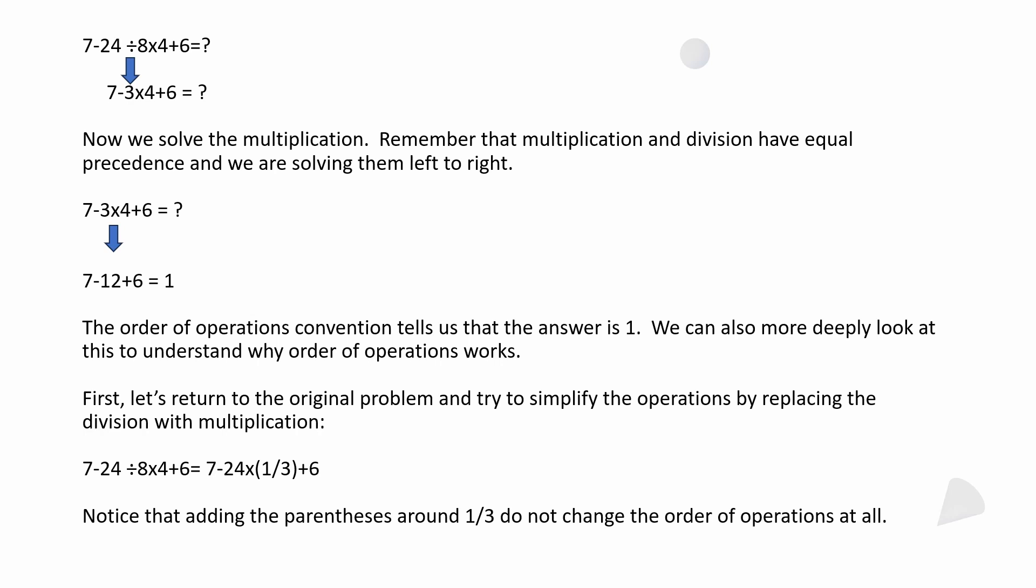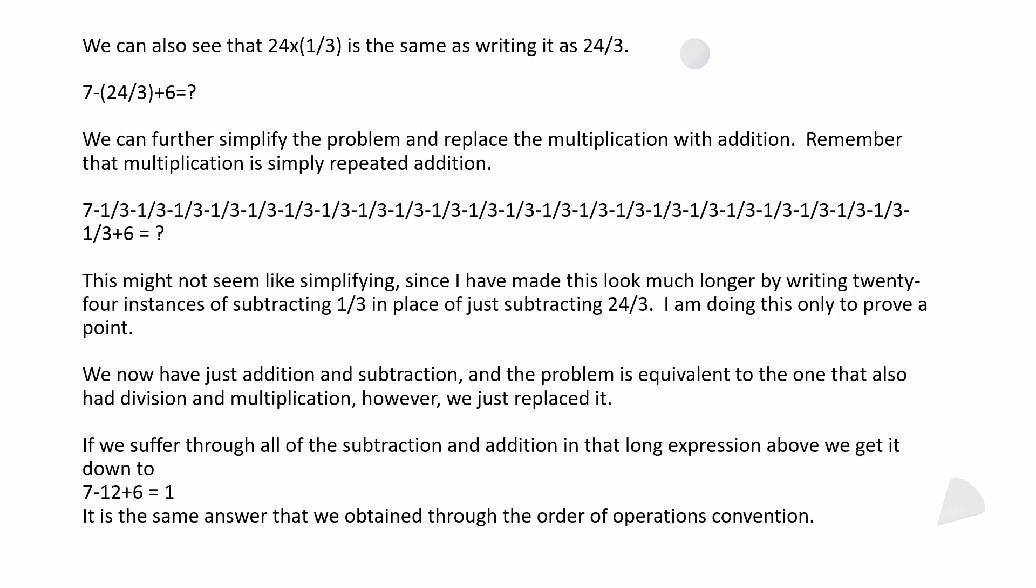The easiest way to look at it would be to go back to the original problem and then try to simplify it by replacing all the division with multiplication. Notice here that I added parentheses around the one third, and it doesn't change the order of operations. So instead of dividing by three, I'm saying times 24 by a third. Now we can also see that 24 times a third is the same thing as writing it as 24 over three.